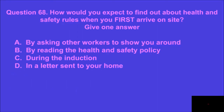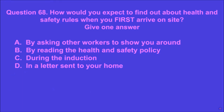Question 68: How would you expect to find out about health and safety rules when you first arrive on site? Give one answer. A: by asking other workers to show you around, B: by reading the health and safety policy, C: during the induction, D: in a letter sent to your home. C is the correct answer.